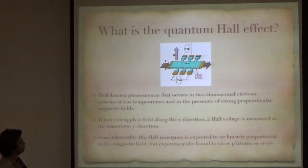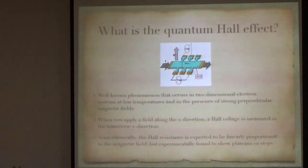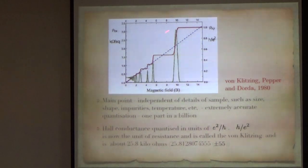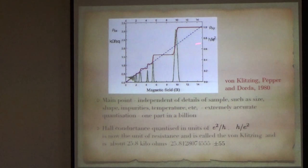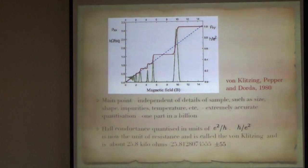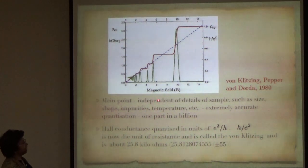Semi-classically, you can explain this very simply. The Hall resistance was expected to be linearly proportional to the magnetic field, but experimentally what was seen is that you actually got very well quantized steps as a function of the magnetic field instead of having a linear resistance. The main interesting point was that the quantized steps were completely independent of details of the sample, such as the size, shape, impurities, temperature, etc.